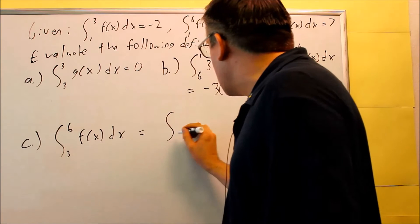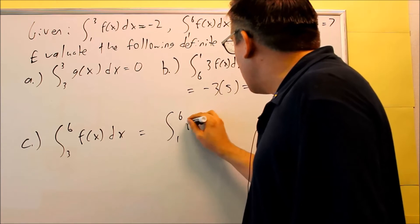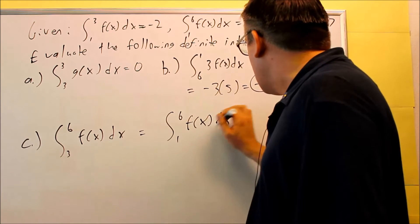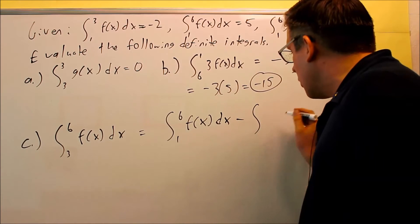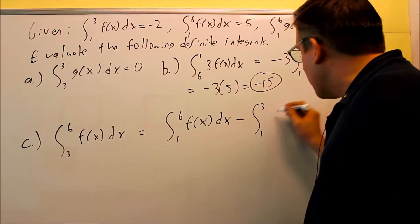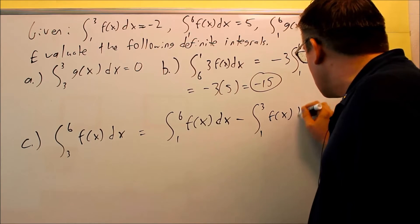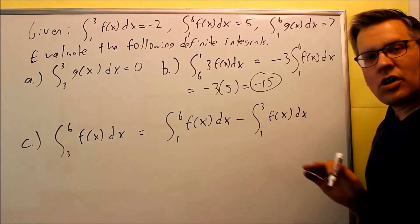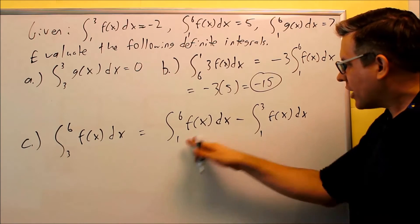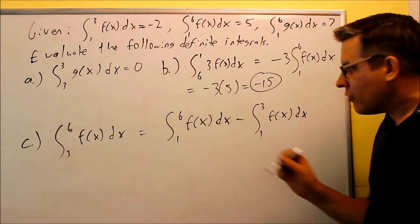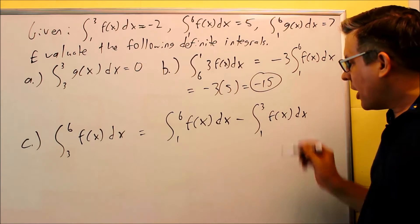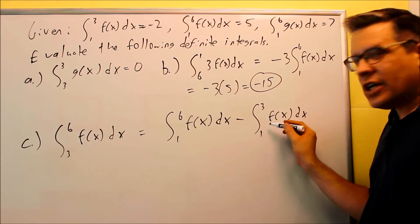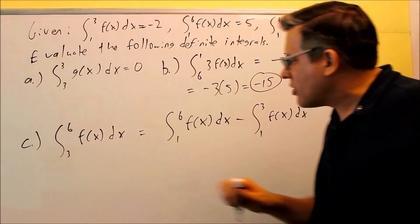I'm going to write this as the integral from one to six f of x dx. But then what I'm going to do is I'm going to subtract the integral from one to three f of x dx. So it's a modification of that one property we talked about. You can break the limits up any way that you want to, but if I go from one to six and take that whole entire area, but I remove the area from one to three, that's going to leave me with three to six left over.